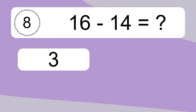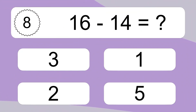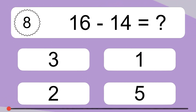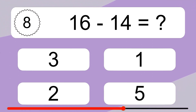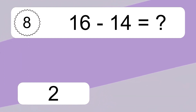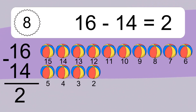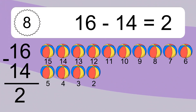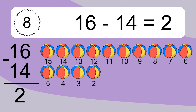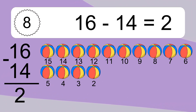16 minus 14 equals what? 16 minus 14 equals 2. Let's count it: 15, 14, 13, 12, 11, 10, 9, 8, 7, 6, 5, 4, 3, 2.